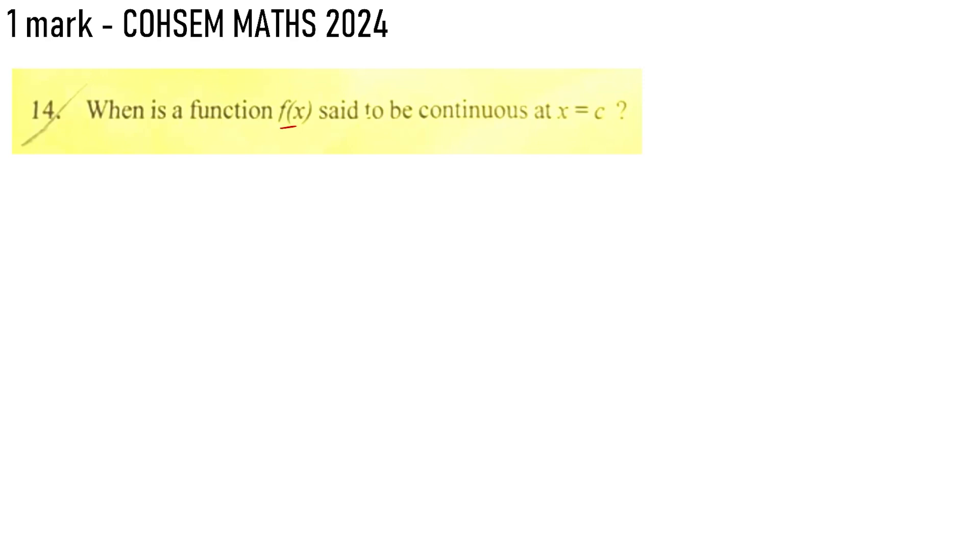When is a function f(x) said to be continuous at x equals c? This is a definition-based variable question. At least one mark you can get. First of all, f(c) must exist. Then the limit must exist. Limit must equal f(c). Or more specifically, the left-hand limit equals the right-hand limit equals the limit of the function. So limit of f(x) as x approaches c from the left equals f(c) equals limit as x approaches c from the right equals the function value at c.